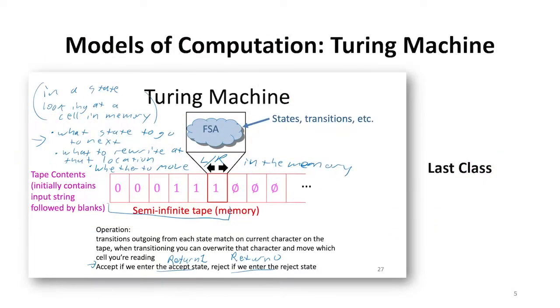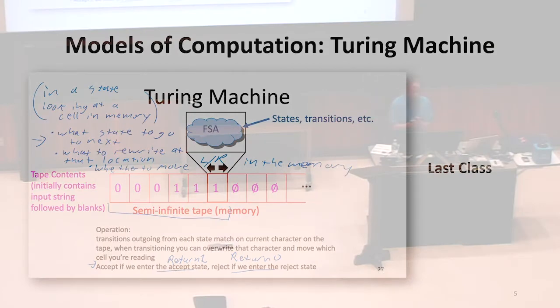Then last class, we started talking about Turing machines, which add to the finite state machine some memory, some memory that's unbounded. We can think of that as being a tape which goes on forever. So all of these are models of computation.